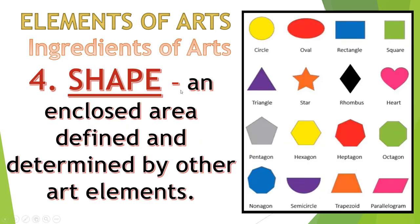Number four is shape. Shape is an enclosed area defined and determined by other art elements. Examples of shapes include circle, rectangle, square, triangle, star, rhombus, heart, pentagon, hexagon, heptagon, octagon, semicircle, trapezoid, and parallelogram.